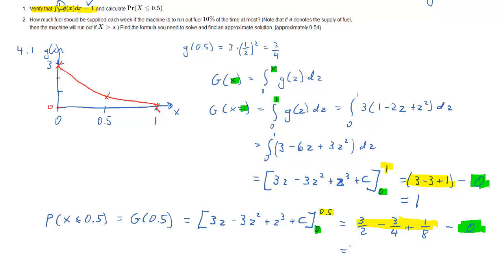And that we can simplify. The common denominator is 8, and that's then 12 minus 6 plus 1, and that is 7 eighths. So the probability that x or the consumption is smaller than or equal to 0.5 is 7 over 8.